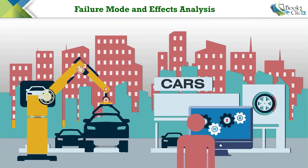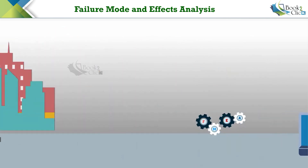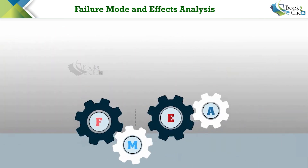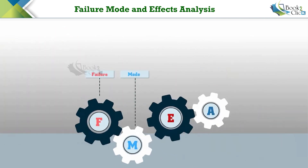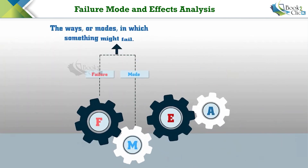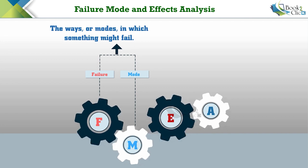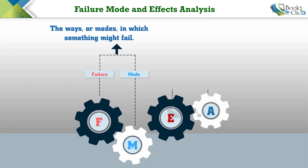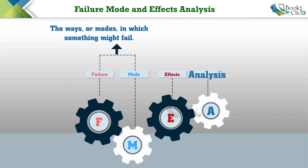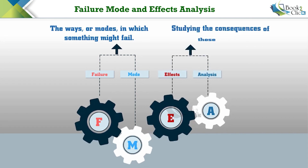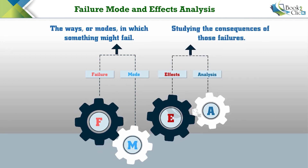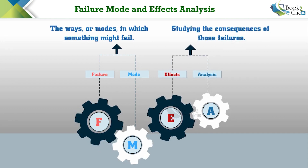FMEA is a common process analysis tool. Here, failure mode means the ways, or modes, in which something might fail. Effects analysis refers to studying the consequences of those failures.